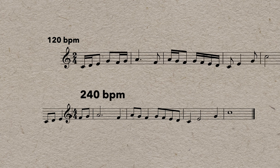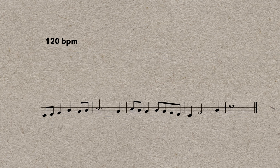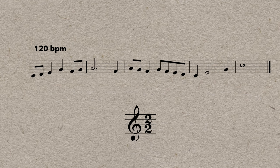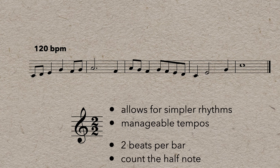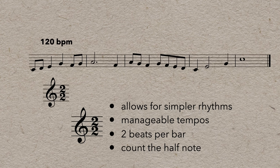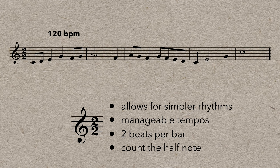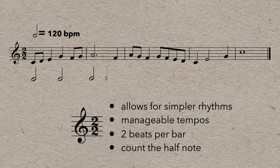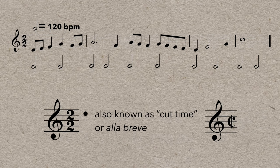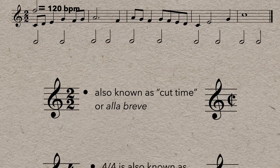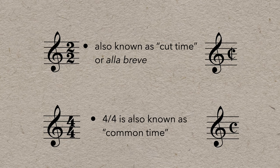And you may injure the conductor as they try to keep up. But we can actually have the best of both worlds by using a 2-2 time signature, which allows for simpler rhythms and more manageable tempos. 2-2 means each bar is 2 beats long, and you're counting the half note. So in this case, 120 beats per minute means 120 half notes, not quarter notes per minute. 2-2 is often called cut time, or sometimes a la breve, and can also be notated with this symbol, a C with a vertical line through it, similar to how 4-4 time is often known as common time and notated with a C.